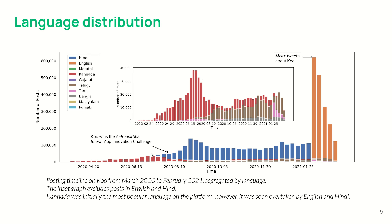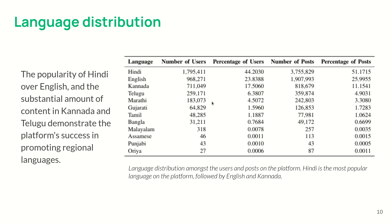We studied the language distribution on the platform through time. We see that Kannada was initially the most popular, then Hindi rose in popularity, and finally English became the most popular. When we study the number of users and posts in each language, we see that Hindi actually supersedes English, and there is also a significant portion of Kannada and Telugu present. This shows that the platform has been successful in promoting regional languages.